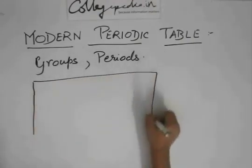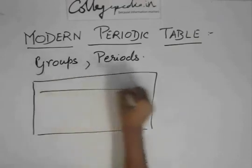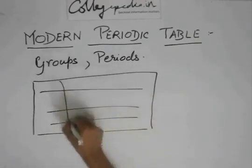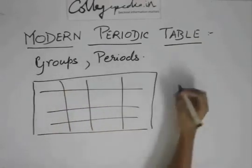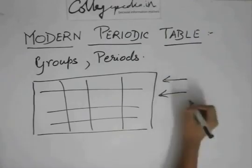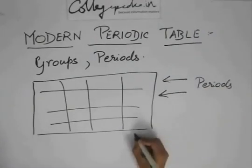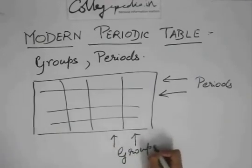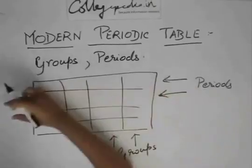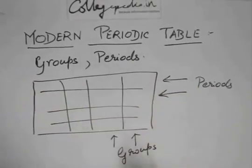Suppose this is a table, any table, not necessarily the periodic table. These are called the periods and these are called the groups. So basically, the rows are the periods and the columns are the groups.